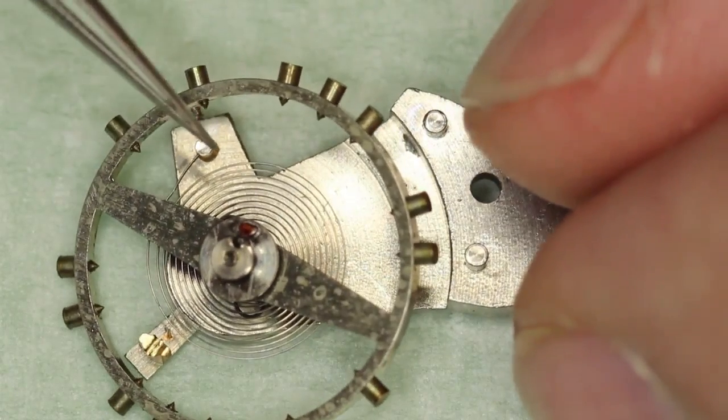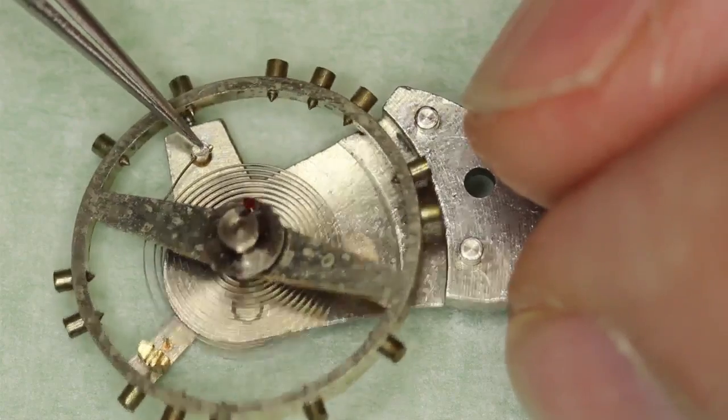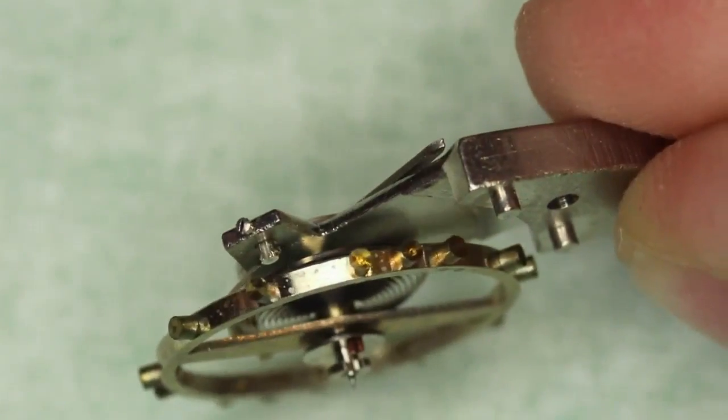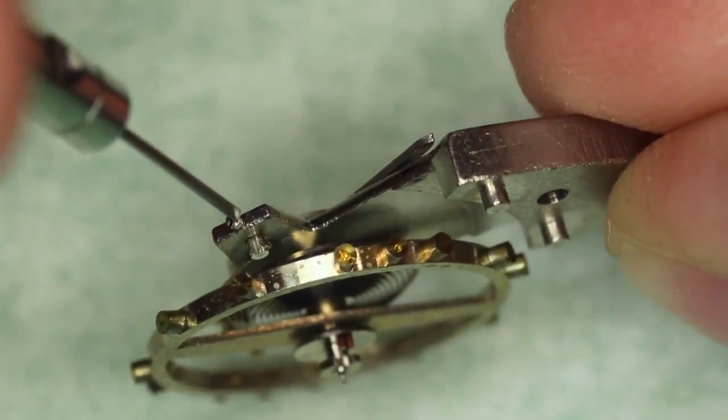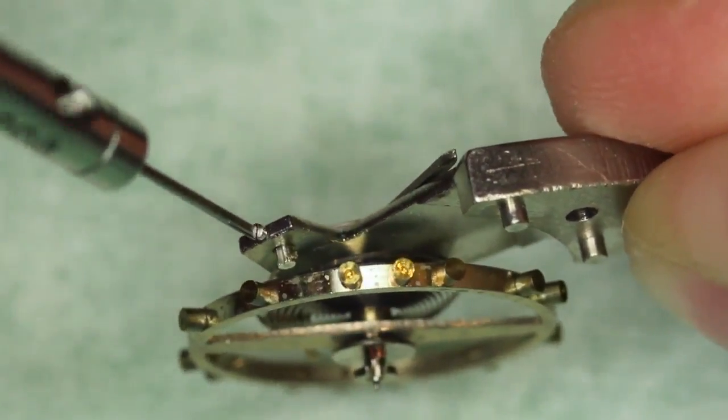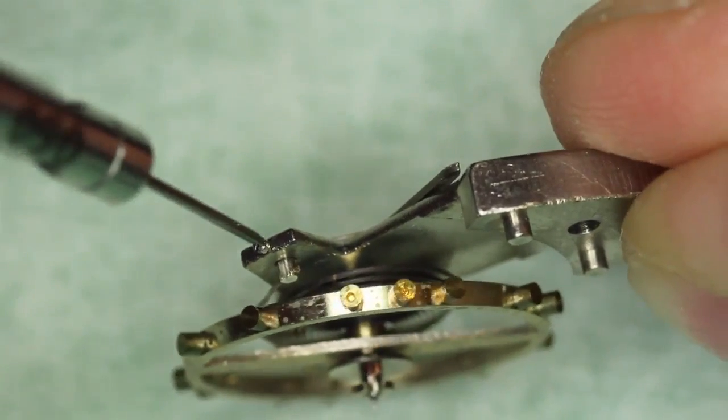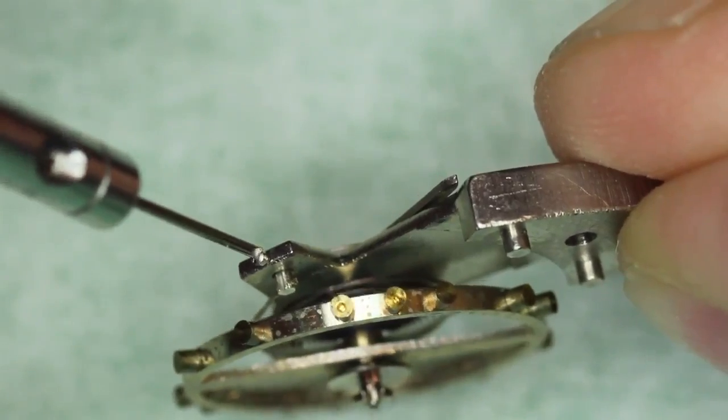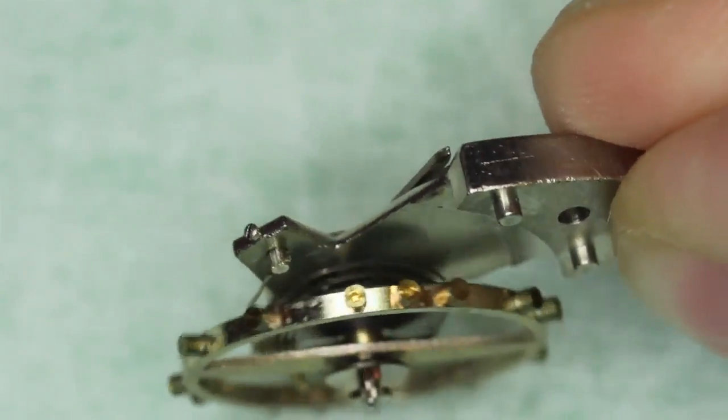Start off by locating the stud and screw that in place. You can slightly loosen that and adjust the height of the stud as required once it's assembled into the watch.